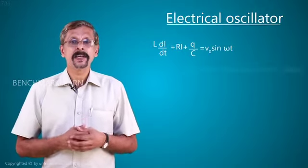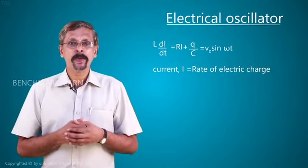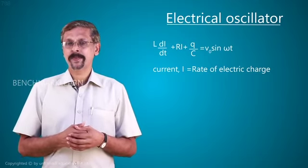Now we will modify this equation in a simplified form. We know that current is the rate of electric charge. If the electric charge is Q, then I equals dQ by dt.